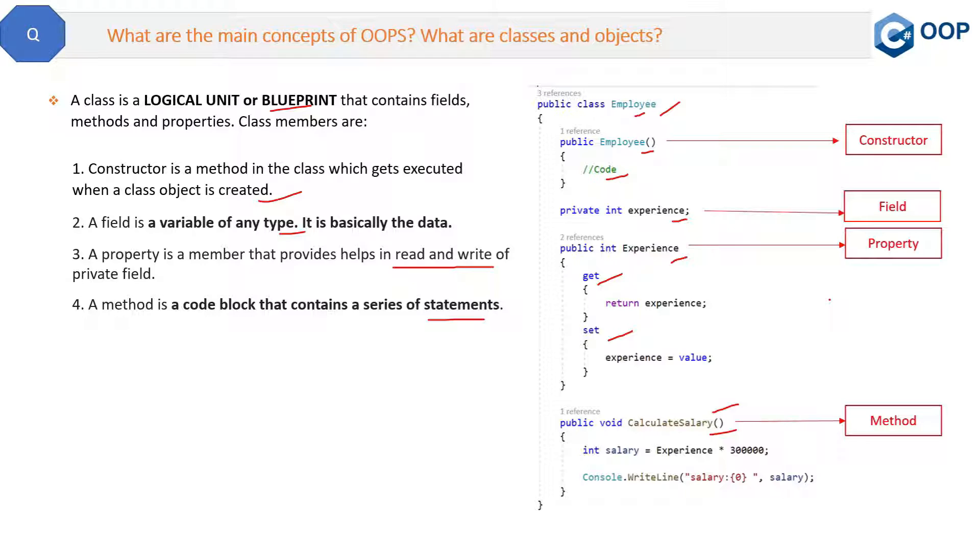Now the question is how can we use this class in our application? We have a class, this is the blueprint. Now how we can use it? Because the class in itself is doing nothing. A class can only be used when you create the object of this class, and that is like this. So here we are creating the object employee of the Employee class.